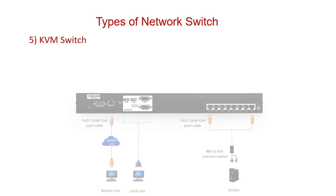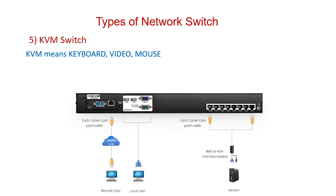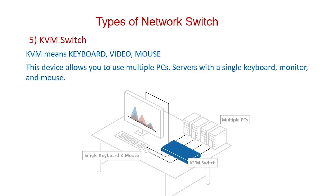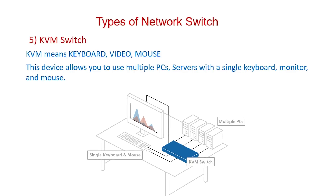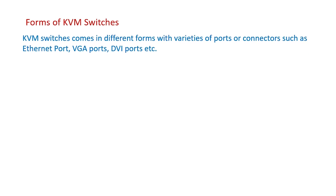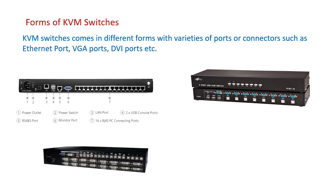Fifth, the KVM switch. KVM stands for keyboard, video, mouse. This device allows you to use multiple PCs or servers with a single keyboard, monitor, and mouse. Imagine having to manage about 3 or 4 PCs or servers from one desk — you cannot put 4 monitors, 4 keyboards, and 4 mice on your desk. KVM allows you to connect the PCs to the switch, and the switch is then connected to a single keyboard, monitor, and mouse. KVM switches come in different forms with various ports or connectors such as Ethernet ports, VGA ports, and DVI ports, among others.